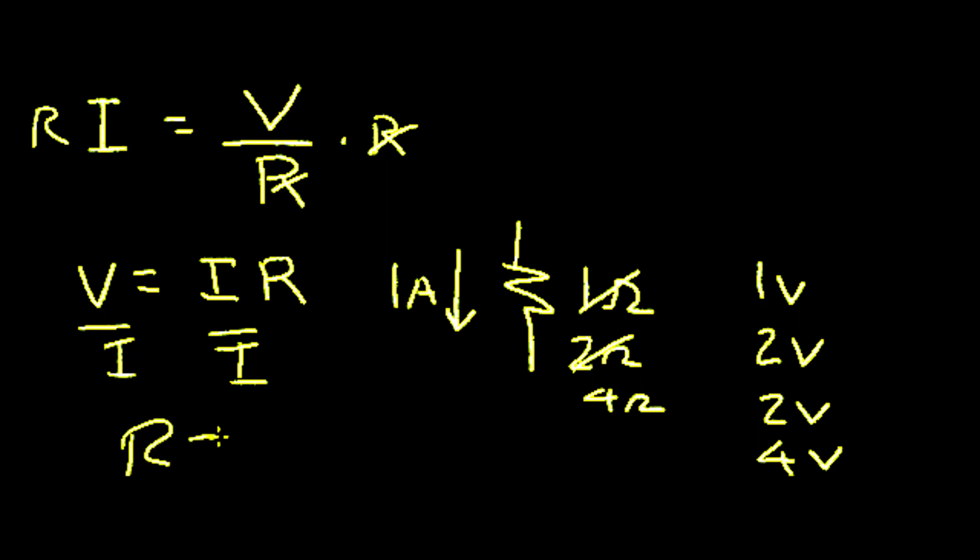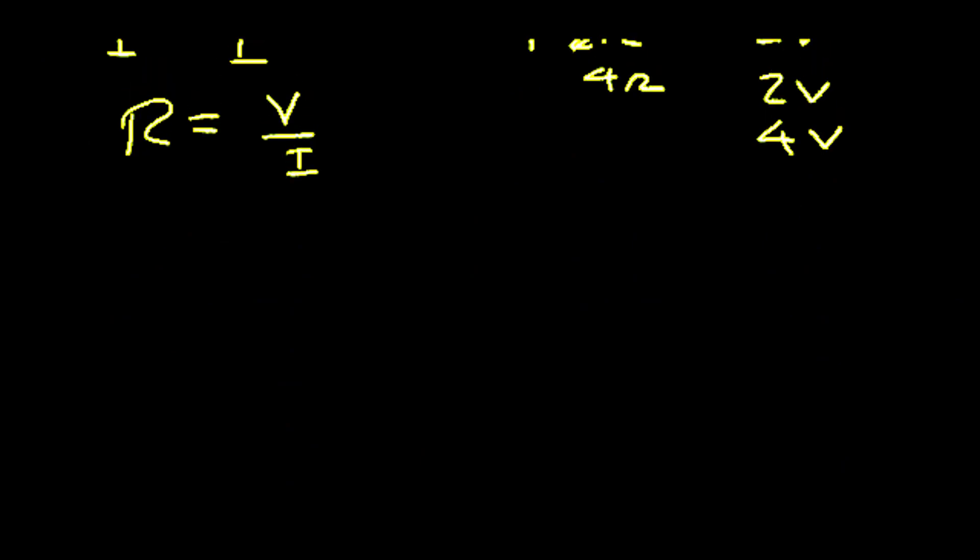Let's think about that just a little bit. If we have a resistor, say we don't know what it is but we have an ammeter here and we measure a current, we have a voltage that we can measure across the resistor with a voltmeter V.